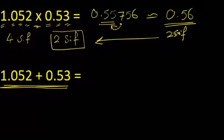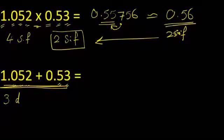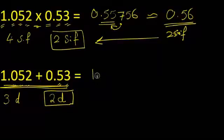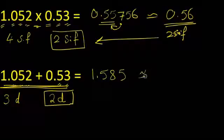If we look at the next example, this one is addition. In this case, we count the decimals and the answer will follow the least number of decimals. The first number has one, two, three — that's three decimals. The second number has one, two — that's two decimals.